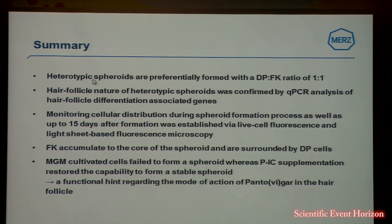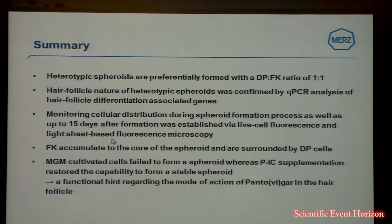To summarize the results: we could use a heterotypic spheroid with a DP-to-FK ratio of 1 to 1. The hair follicle nature of the spheroid was confirmed by QPCR. We established two systems to monitor cellular distribution within the spheroid formation process and after formation. In our model, the FKs accumulate to the core and the spheroid is surrounded by the dermal papilla cells. With our MGM-PIC model, we showed that MGM alone is not able to build a spheroid, whereas supplementation with PIC restores spheroid formation capability — providing another functional hint regarding the action of Pantuvigar in the hair follicle.